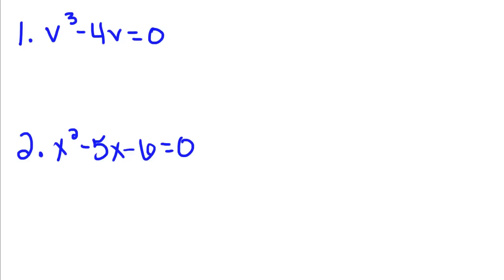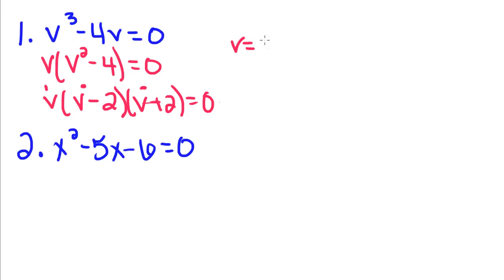This time we're going to do a different kind of factoring. We can pull out a V from both of these and we get V squared minus 4 equals zero. And then, since this is a difference of squares, this becomes V minus 2 and V plus 2 equals zero. And then you have to set each one of these factors equal to zero. And V counts as a factor because if V equals zero, then this whole thing is going to equal zero.